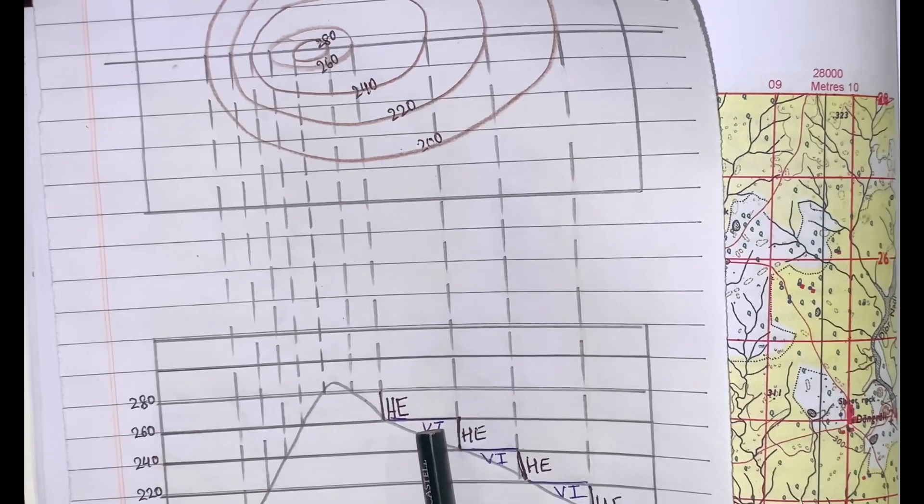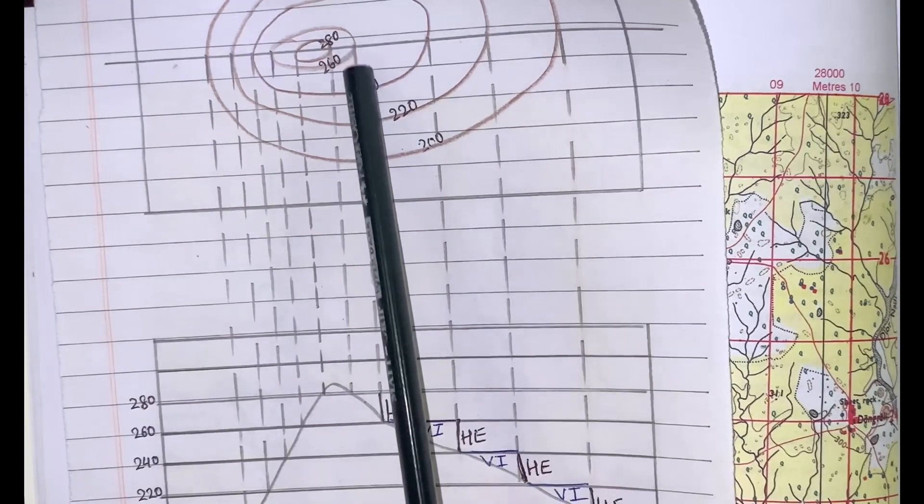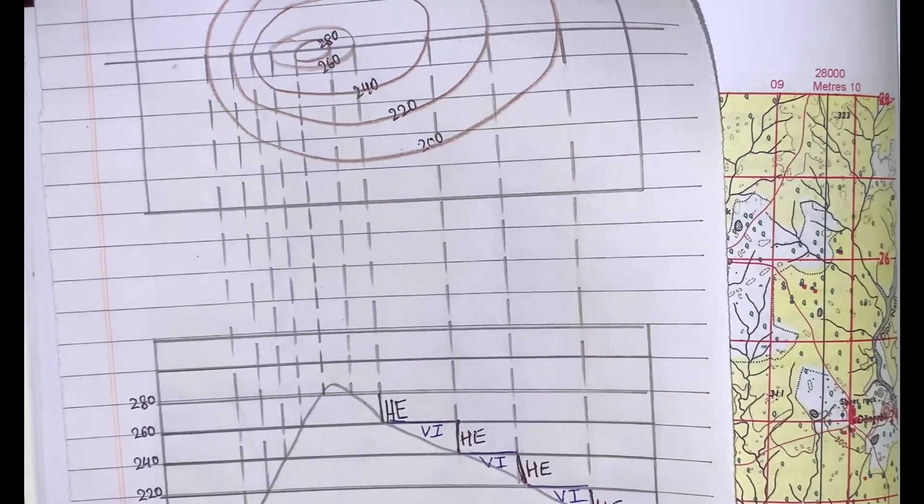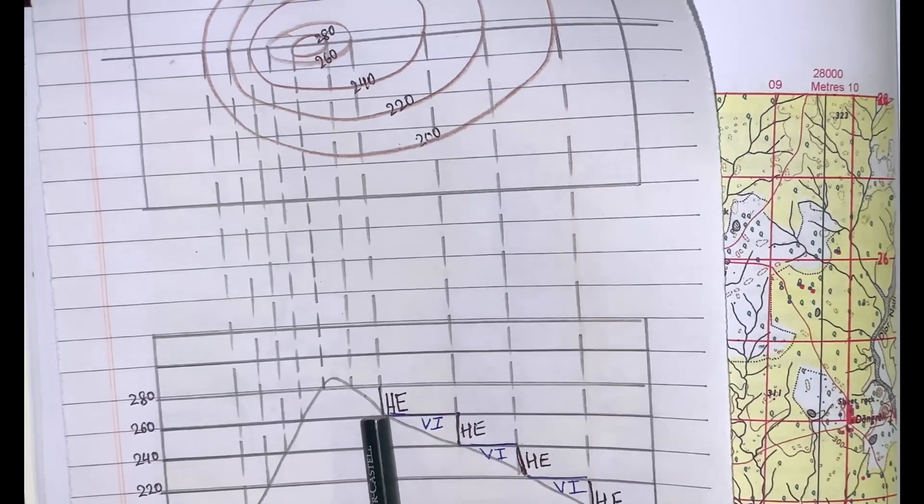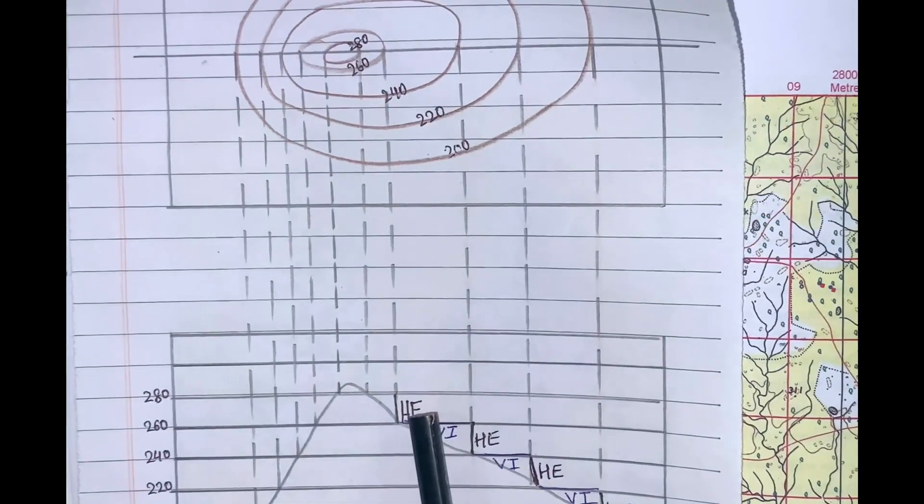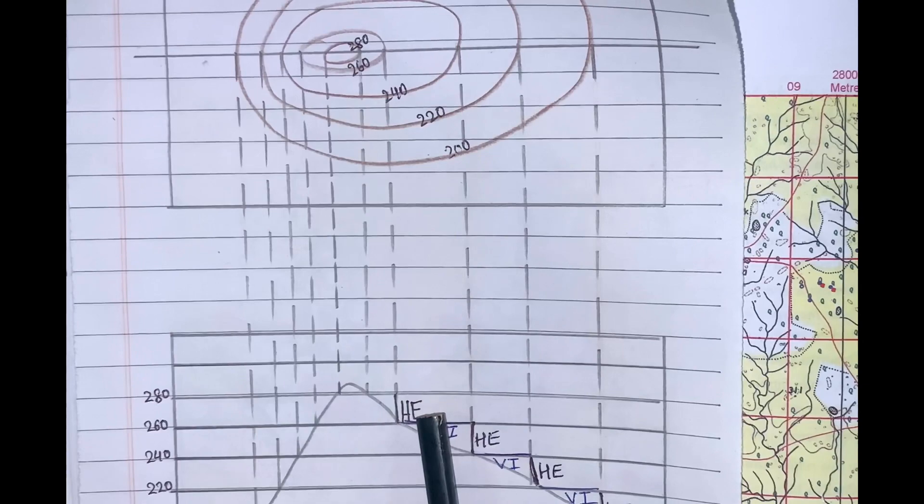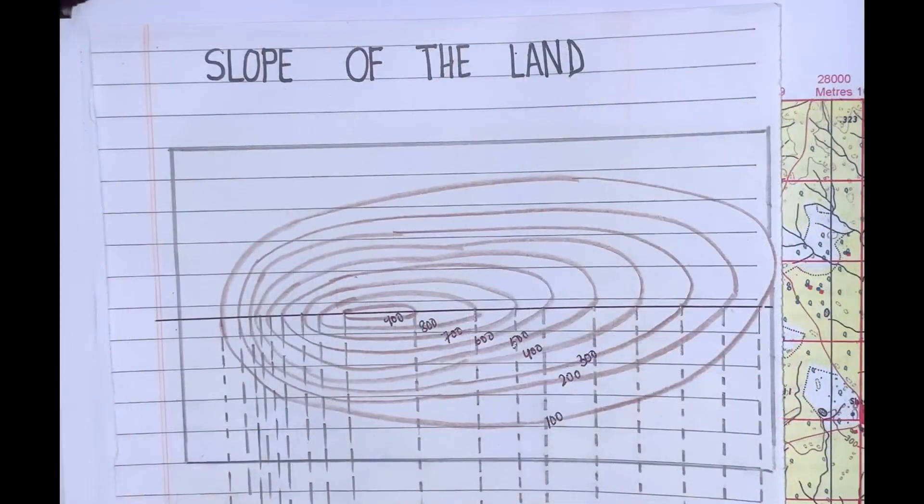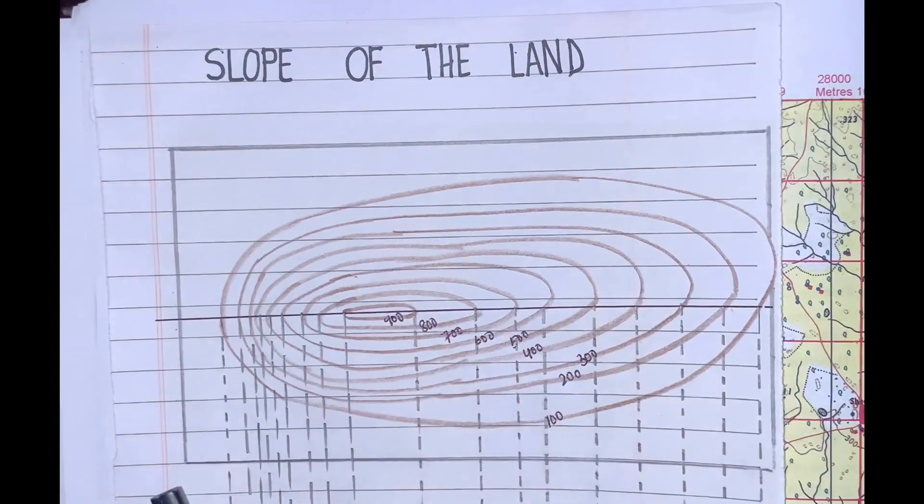In the same way, the horizontal distance between two consecutive contour lines, this difference between two consecutive lines, is known as horizontal equivalent. It is shown here in the cross section of the contours. HE, horizontal equivalent, indicates the slope of the land.